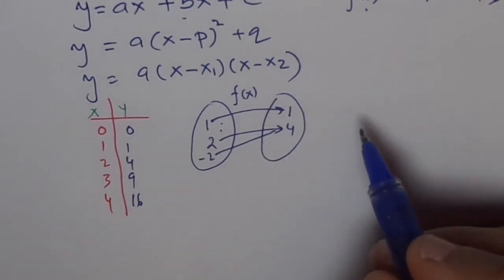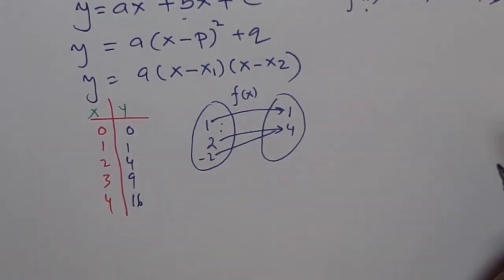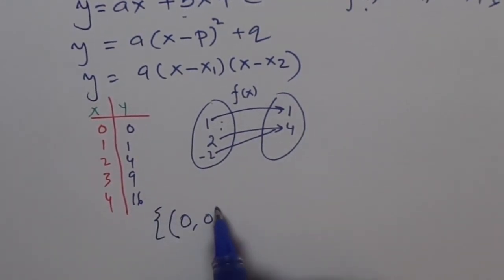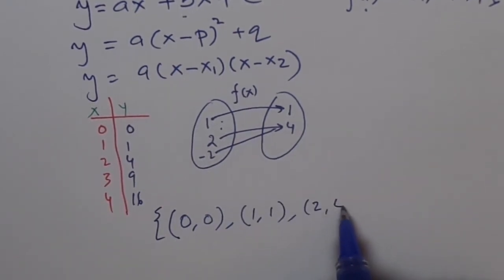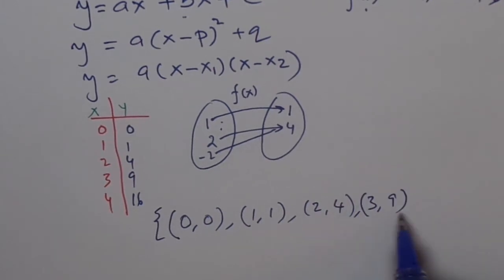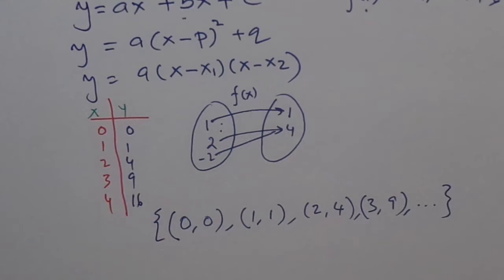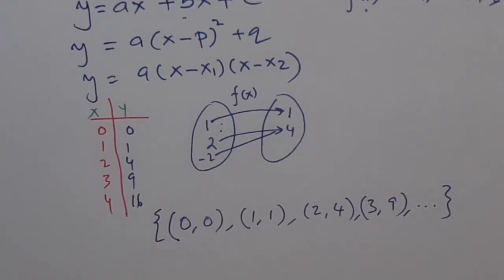Similarly, we can represent function in so many different ways. We can represent function in the form of ordered set. I can write this as (0, 0), (1, 1), (2, 4), (3, 9) and so on. So I can represent quadratic function in so many different ways.